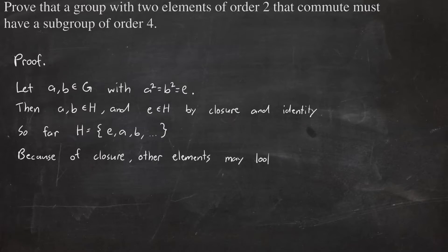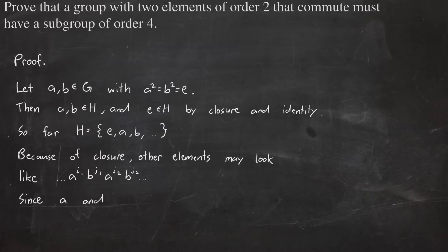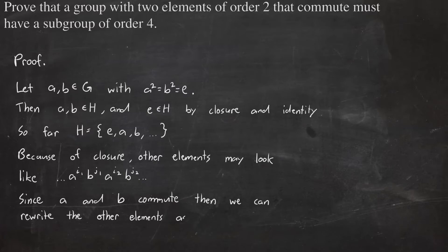We can generalize all these other elements to look like a to the i, b to the j, a to the i, b to the j, and so on. And since a and b commute, we can combine all the a's and all the b's, and we'll get a to the i times b to the j, which is the same as b to the j times a to the i.